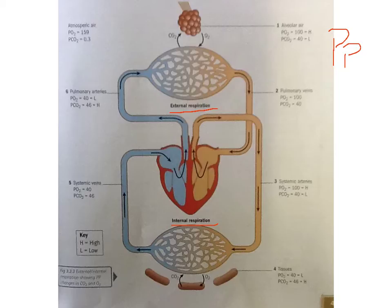External respiration happens in the lungs, so let's look at that first. You'll see here from the top that the partial pressure of oxygen in the alveoli sac is given a figure of 100, which is high.